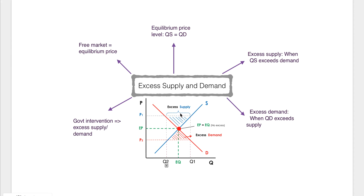Now looking over here at excess supply. If you follow this grey line — if there's a really high price in the market, then loads of suppliers are going to say, yeah, we've got a really good opportunity to make profit, so they'll supply at quantity supplied Q1 up here. But if the price is so high, not many people are going to want to buy this product — they'll say it's a bit of a rip off, it's above the market equilibrium level. So there's going to be way more suppliers than quantity demanded, and that is why we've got this triangle here of excess quantity supplied.